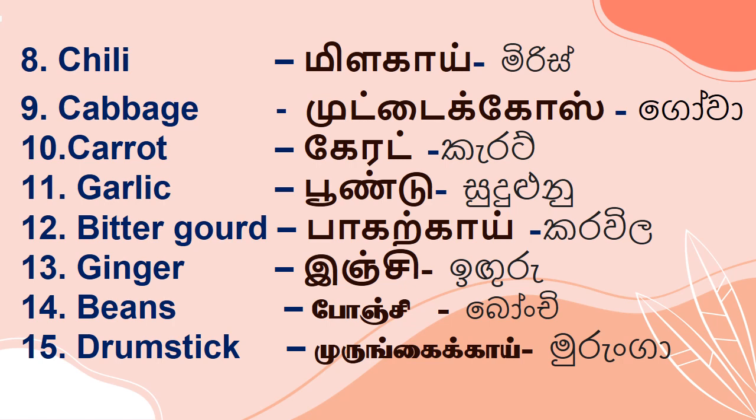Beans. In Tamil: Bonji. In Sinhala: Bonji. We call it Bonji in Tamil and also Bonji in Sinhala. Drumstick. In Tamil: Murungai kai. In Sinhala: Murunga. Drumstick, Murungai kai, Murunga.